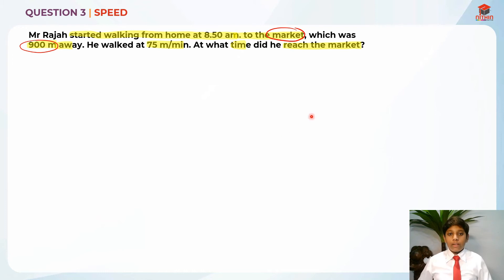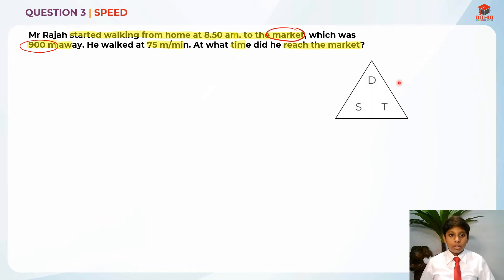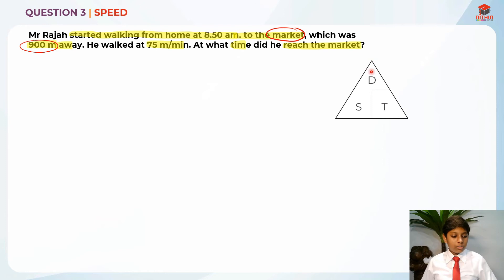When we are doing this question, we should always draw the DST triangle. So here is the DST triangle. The D stands for distance, the S stands for speed, and the T stands for time.